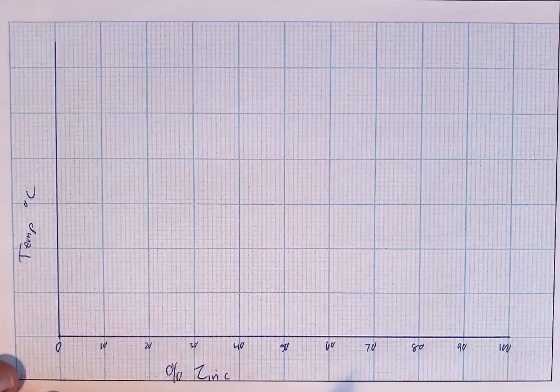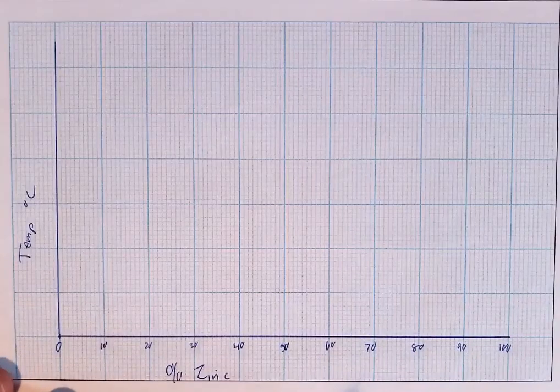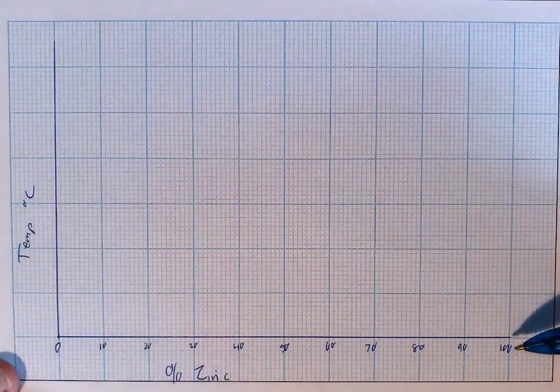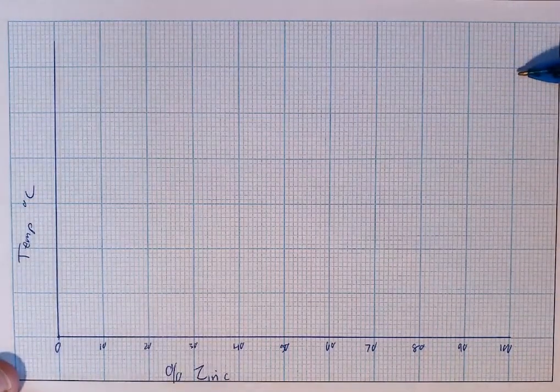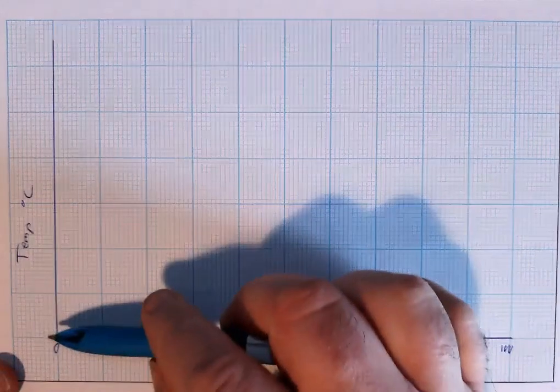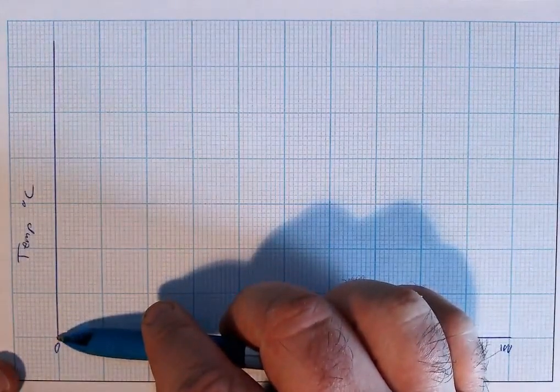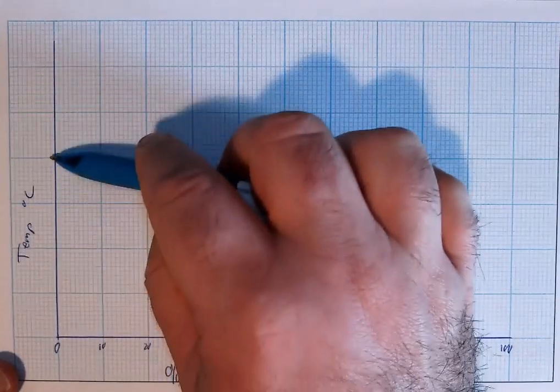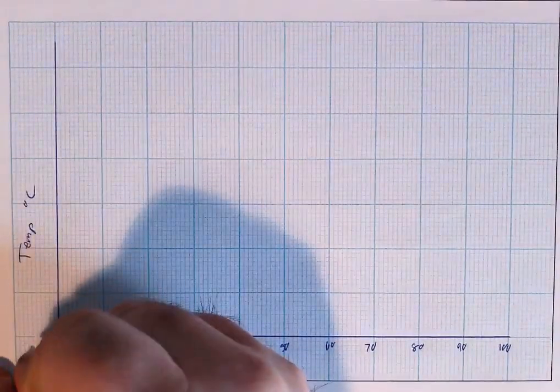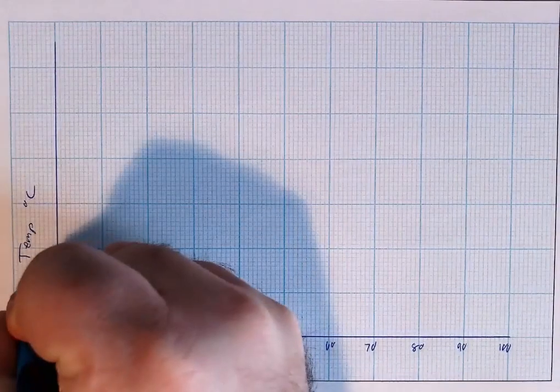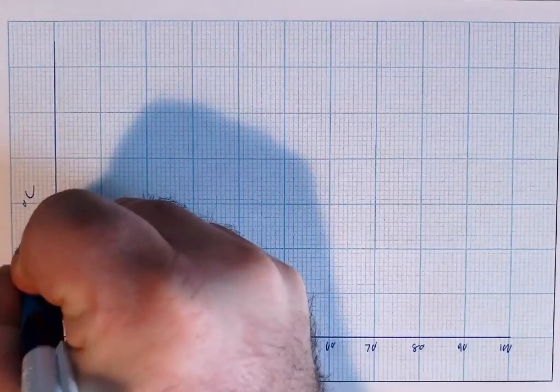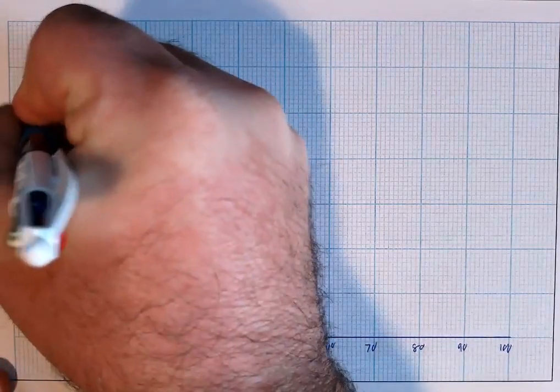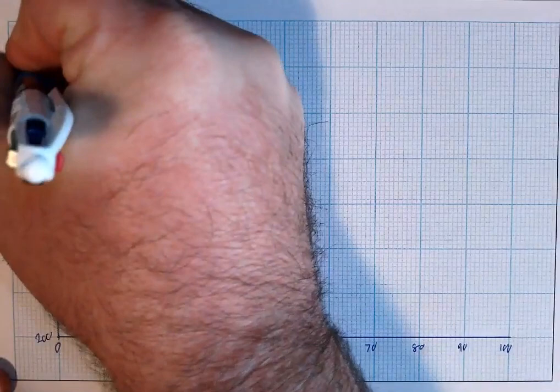Now if you look at the diagram here the lowest temperature is 266 the highest temperature is 401 so we need to fit between 250 and 450, so if we go maybe in steps of 50. Starting from the bottom at 200, 250, 300, 350, 400, 450 and 500.